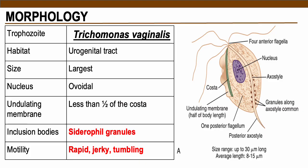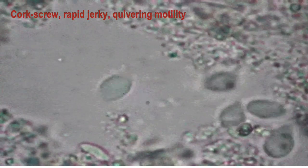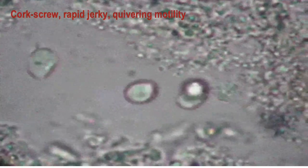Let's start with the only pathogenic Trichomonas species — Trichomonas vaginalis. The habitat of this parasite is in the urogenital tract, and in terms of size, this is the largest among the Trichomonas species. It has an ovoidal nucleus, and the undulating membrane is less than the length of the costa. Most importantly, there are inclusion bodies in their axostyle called siderophil granules. The diagnostic motility characteristic of Trichomonas vaginalis is rapid, jerky, tumbling motility — also described as corkscrew or quivering motility.